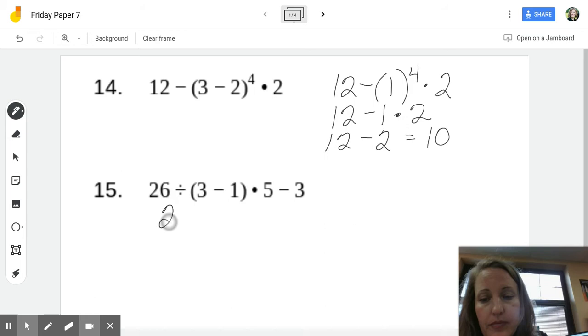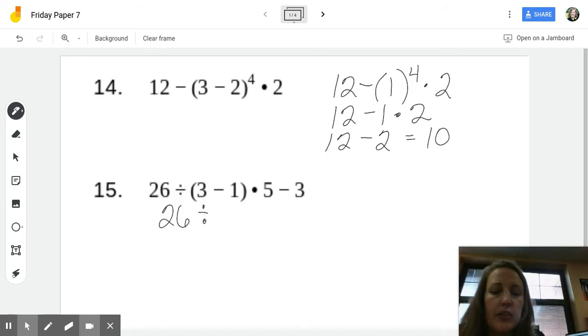Okay, number 15. 26 divided by what's in parentheses. Let's go ahead and evaluate that. 3 minus 1 is 2 times 5 minus 3. Okay, order of operations. PEMDAS sounds like I always multiply before I divide, but I don't. When I have multiplication and division, they're on the same level. So, I'm going to do whichever comes first, left to right. So, that is division.